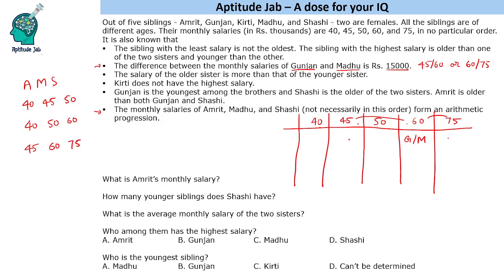Let's test the first case: if Amrit, Madhu and Sashi take salaries 40, 45 and 50 in any order, those three are used up. We are left with Kirti and Gunjan for salaries 60 and 75. Since Madhu has been placed here, the person at 60 must be Gunjan and 75 must be Kirti. But one of the statements says Kirti does not have the highest salary, so this case is eliminated. We cannot have 40, 45 and 50 as the AP.